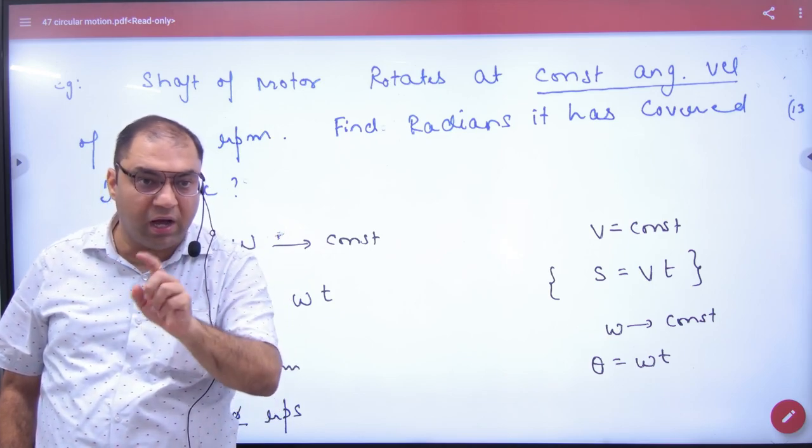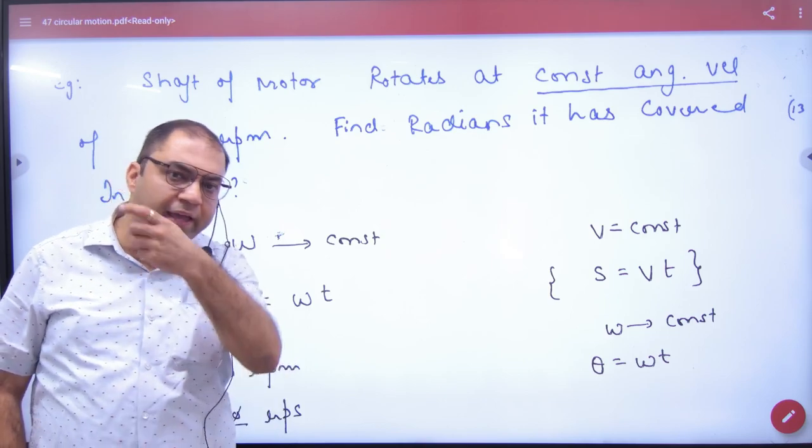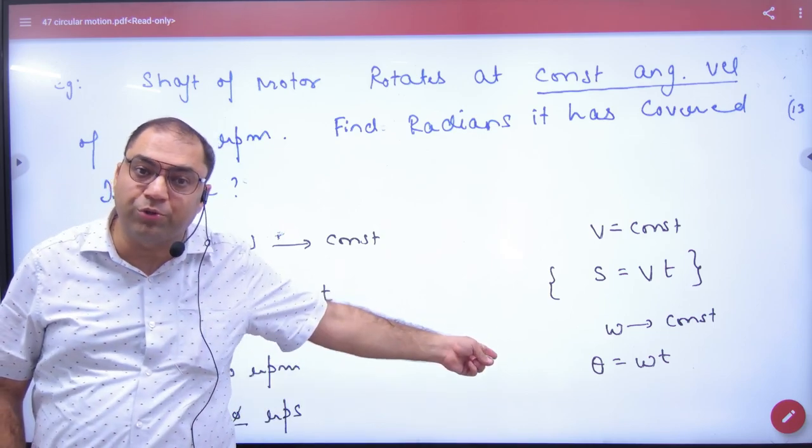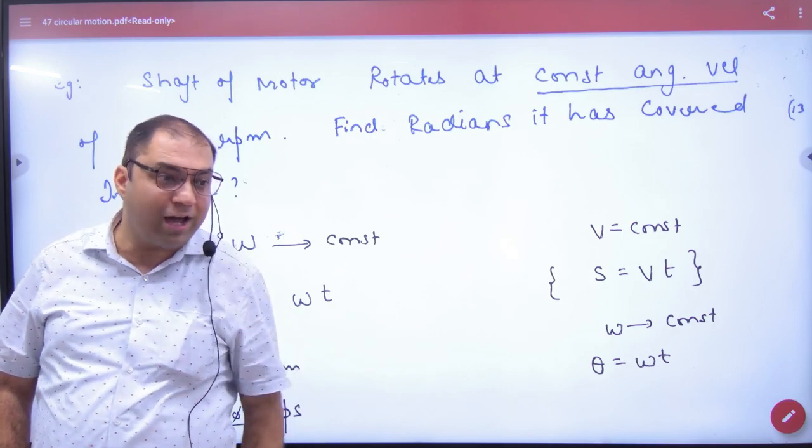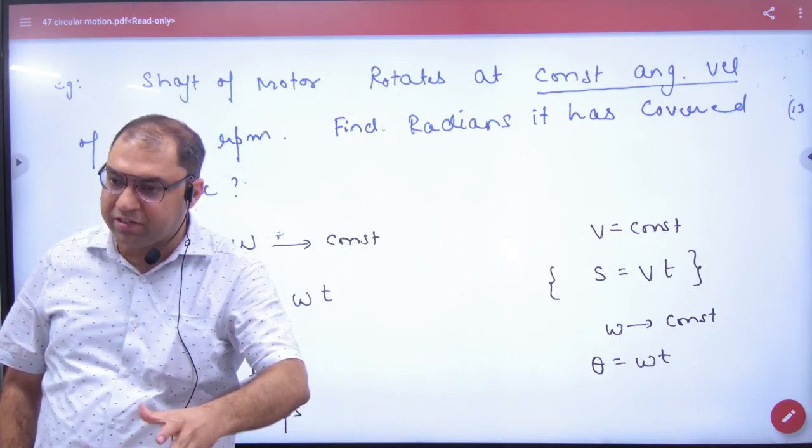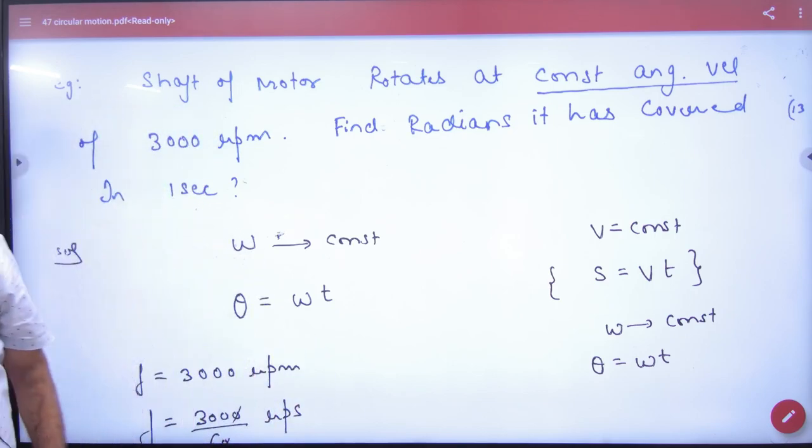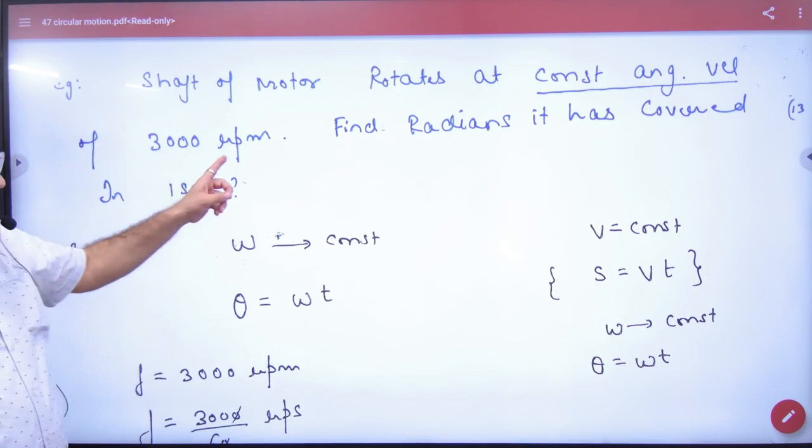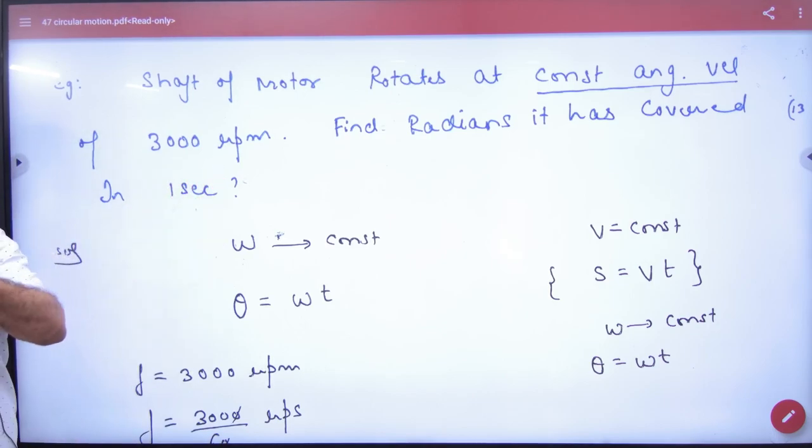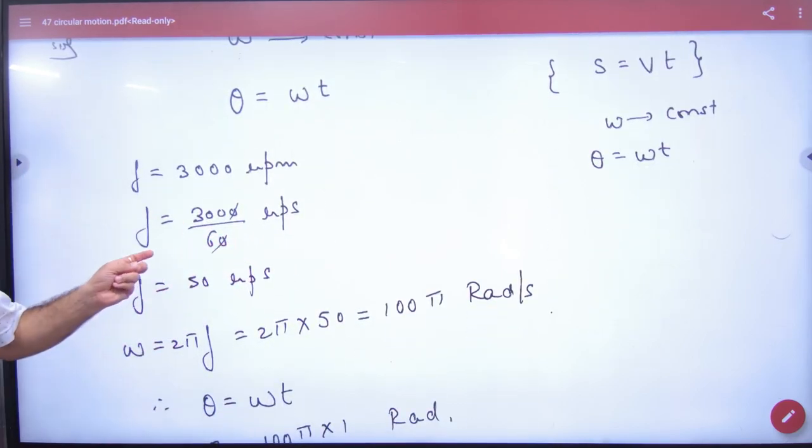RPM means revolutions per minute. The RPM means a lot of revolutions per minute. Frequency - the RPM is never used to do RPS. So for the minute to convert, divide by 60. So the RPM is converted to RPS.